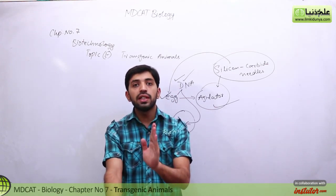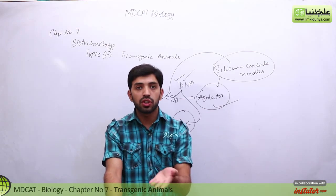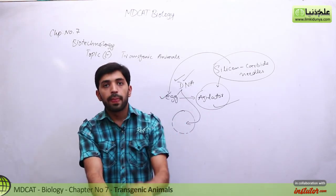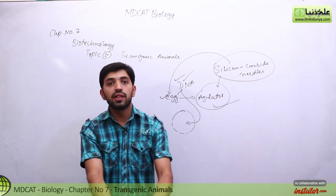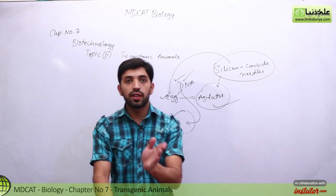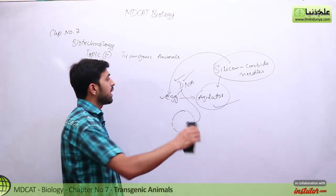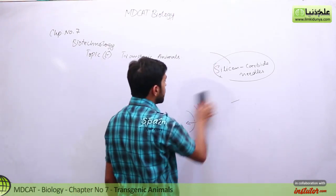Cloning is an asexual mode of reproduction in which only one cell is involved, not two cells, which is asexual mode of reproduction. Like for example, we can see that a transgenic animal is produced.